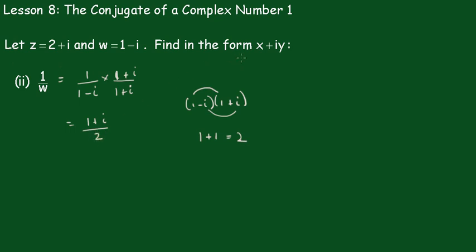So that's over 2. So in the form of x plus iy that is a half plus a half i.